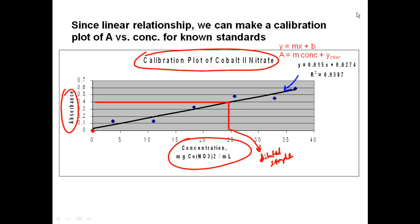Absorbance equals slope times concentration plus y-intercept. We could plug in 0.4 as the absorbance, along with our y-intercept and slope from the plot. If you use Excel to do this plot, you can get your slope and y-intercept, plug them in and solve for concentration. You can also do it by hand: determine the slope using (y₂ - y₁)/(x₂ - x₁) and the y-intercept from where the line crosses the y-axis.